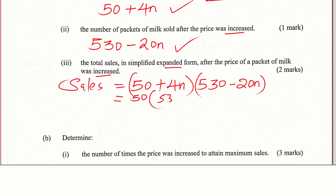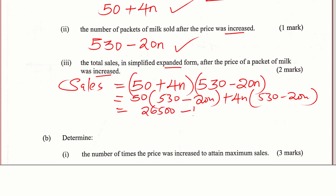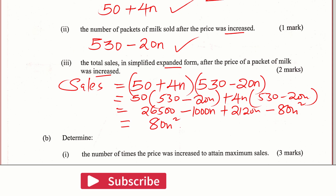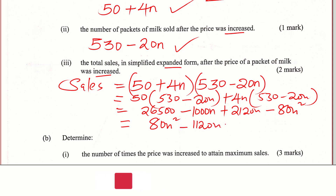Expanding (50 + 4n)(530 − 20n): 50 times 530 gives 26,500; 50 times −20n gives −1,000n; 4n times 530 gives 2,120n; and 4n times −20n gives −80n². Collecting like terms and organizing into a quadratic expression gives: −80n² + 1,120n + 26,500. That is the expression in expanded form representing the total sales.